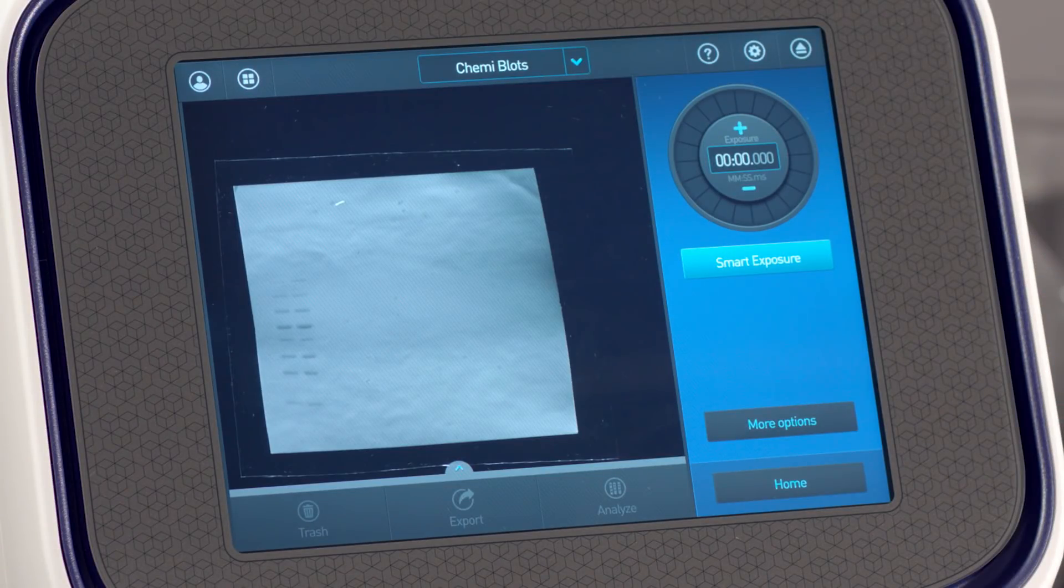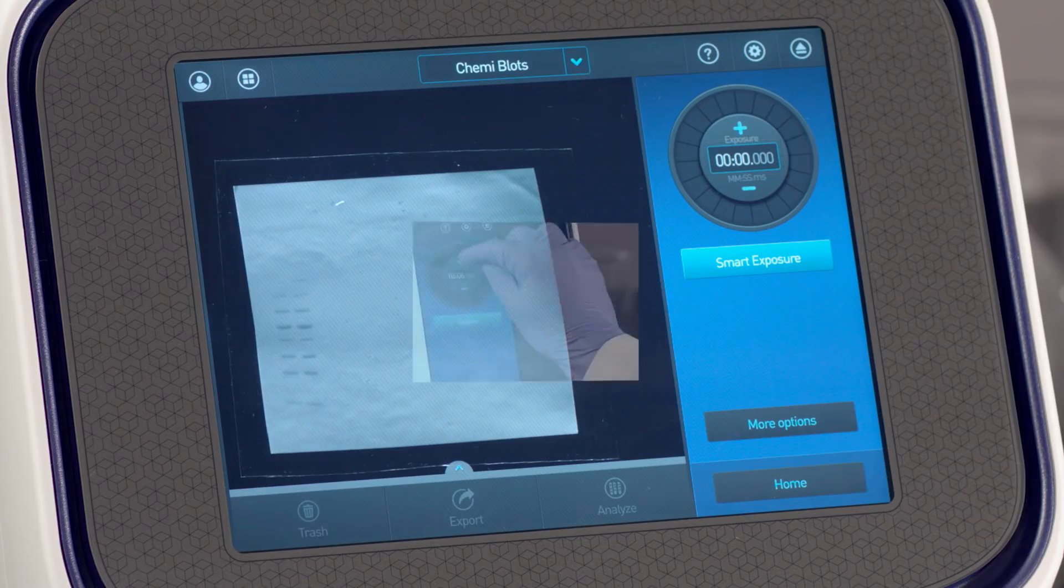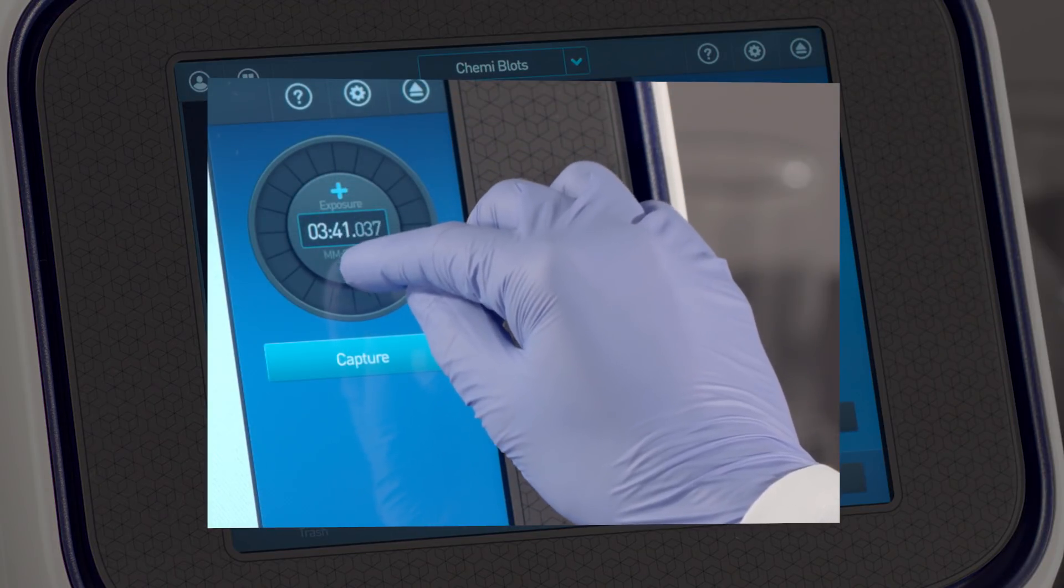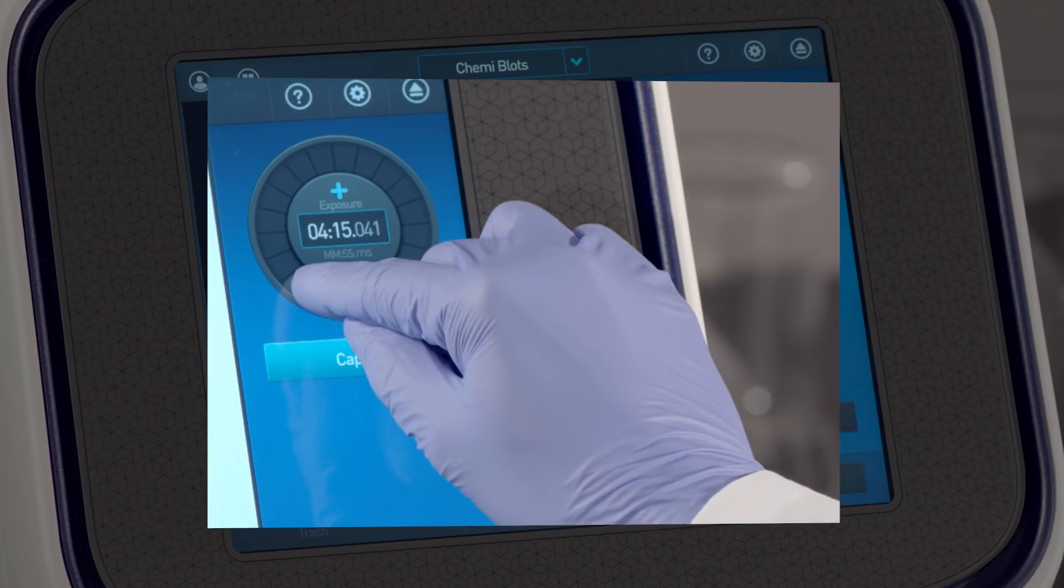To choose a specific predetermined exposure time, tap the center of the time dial to enter in the desired exposure time. Tap the plus or minus buttons to increase or decrease exposure time, or swipe your finger on the exposure dial.